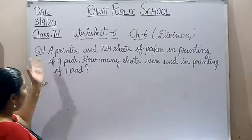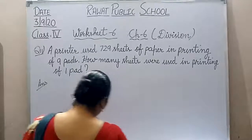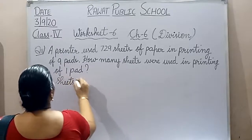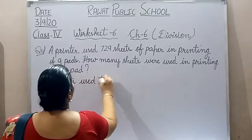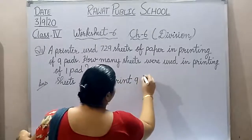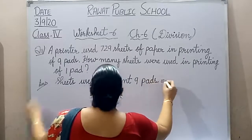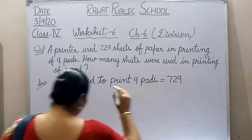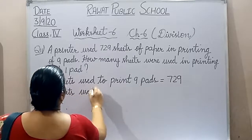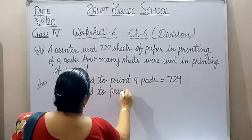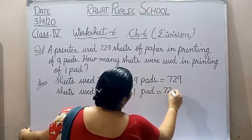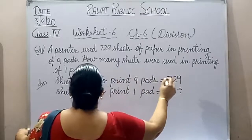First we will write: total sheets is 729. Sheets used to print nine pets = 729. Sheets used to print one pet is equal to 729 divided by 9.